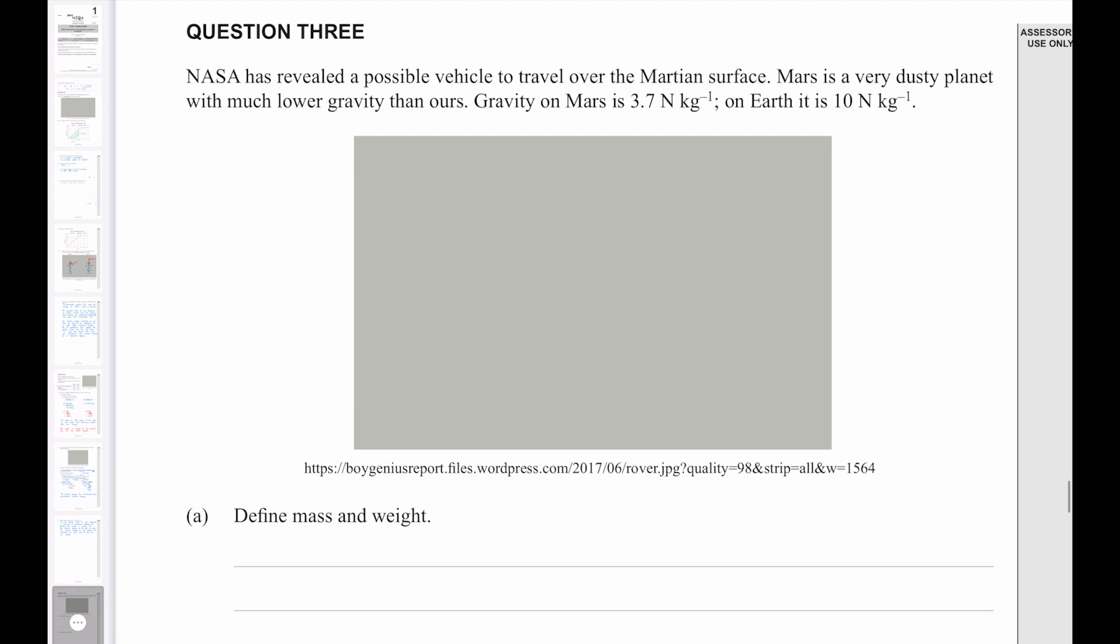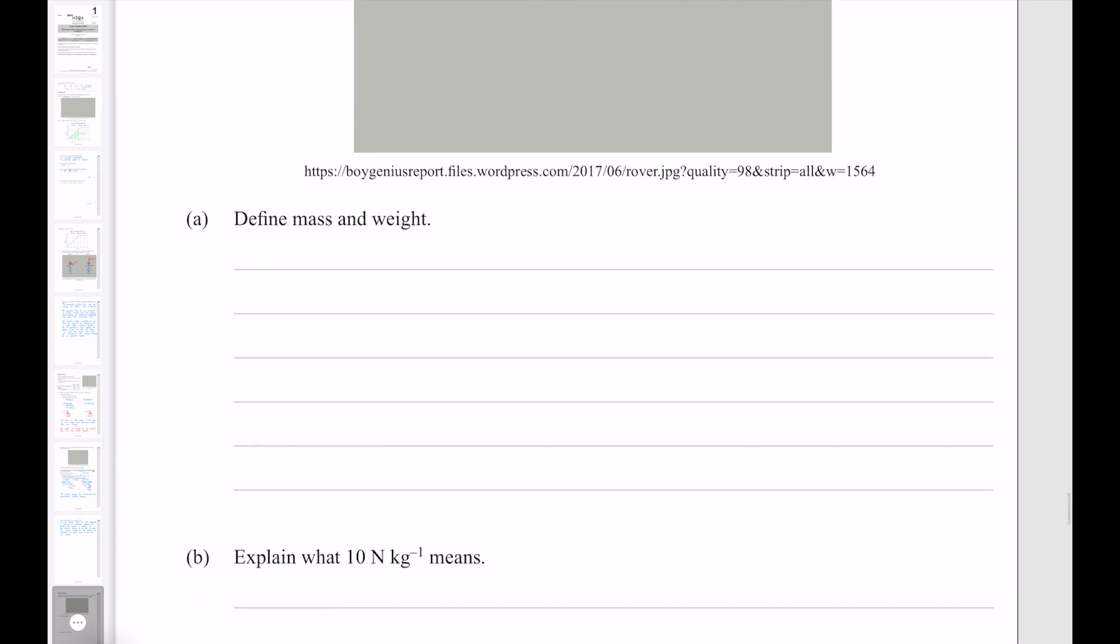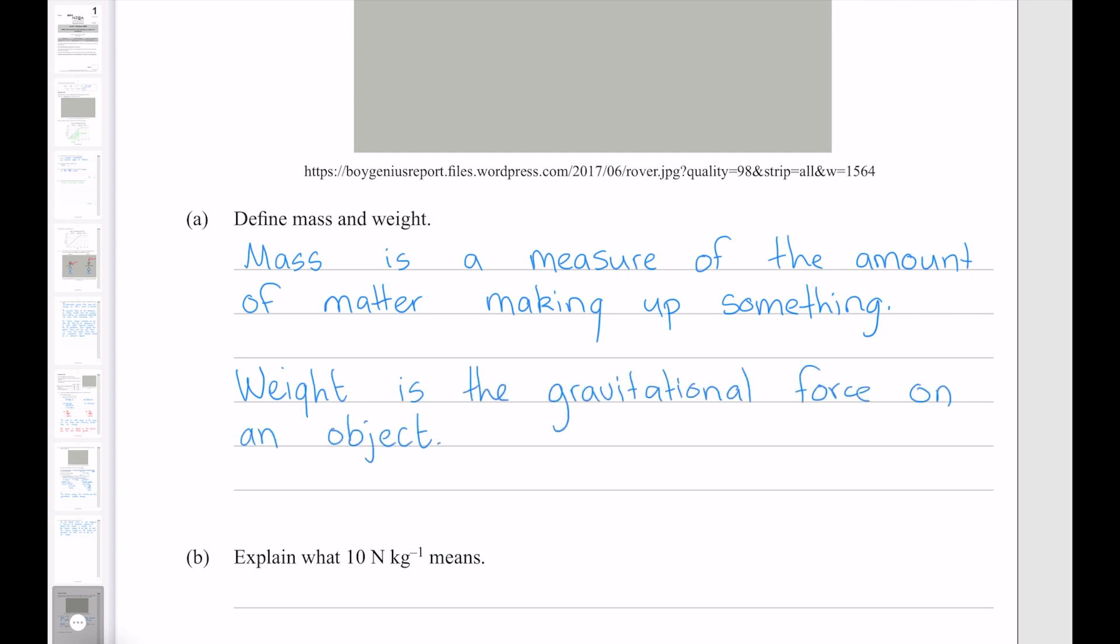Question 3. NASA has revealed a possible vehicle to travel over the Martian surface. Mars is a very dusty planet with much lower gravity than ours. The gravity on Mars is 3.7 newtons per kg. On Earth, it is 10 newtons per kg. Define mass and weight. Definitions that, if you're sitting this exam, you should already know. Mass is a measure of the amount of matter making up something. Weight is the gravitational force on an object.